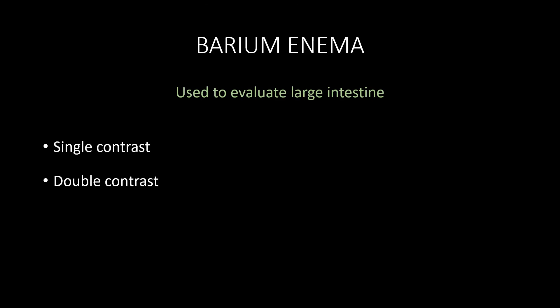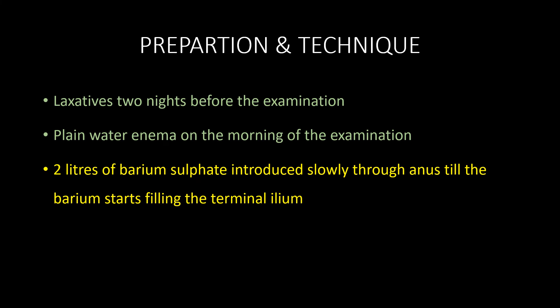Our next technique is barium enema, which is done to evaluate the large intestine. It can be performed as a single contrast method or a double contrast method. The patient is given mild laxatives two nights before the examination and a plain water enema on the morning of the examination. Then two liters of barium sulphate suspension is introduced slowly through the anus until the barium starts filling the terminal ileum, and fluoroscopic images are taken.